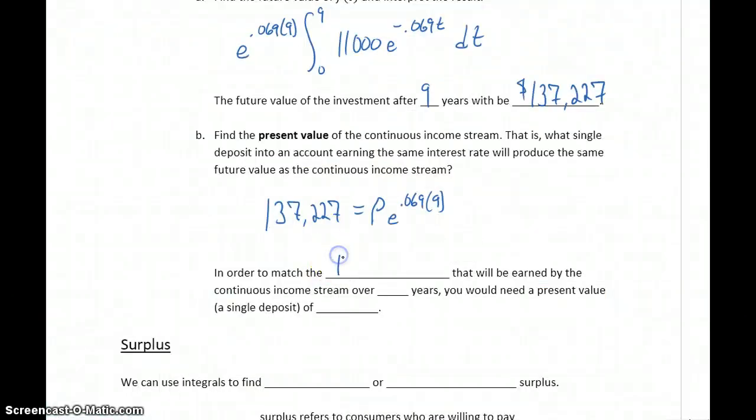So in order to match the $137,227 that we'll generate by investing that continuous income stream, by purchasing that piece of equipment, over nine years, we would need a present value. We would need a single deposit today that we could invest for nine years of $73,747.